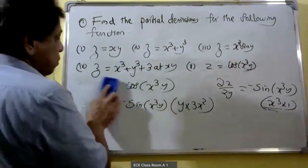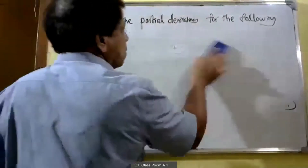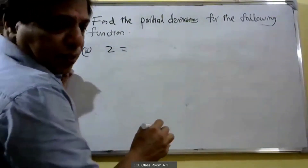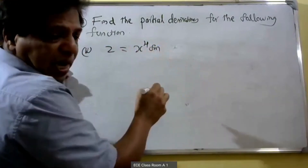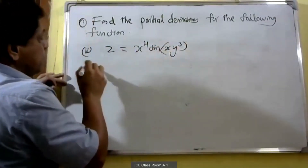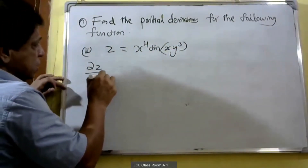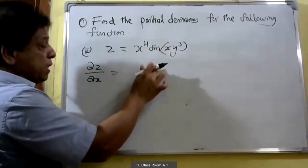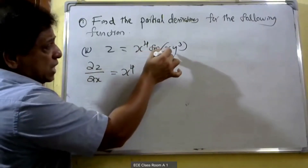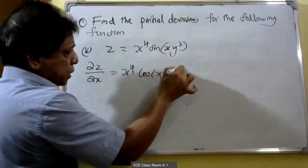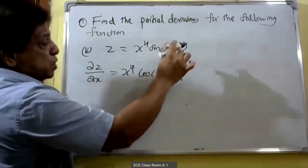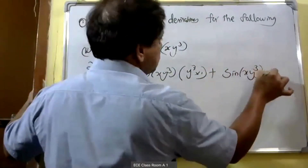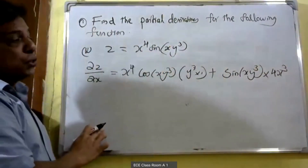Then one more problem: z is equal to x⁴ sin(xy³). Partially differentiating with respect to x, ∂z/∂x — both terms contain x, therefore we apply the product rule. x⁴ into cos(xy³) into derivative of xy³ — y³ is constant, so y³ into 1 — plus sin(xy³) into 4x³. Derivative of x⁴ is equal to 4x³.